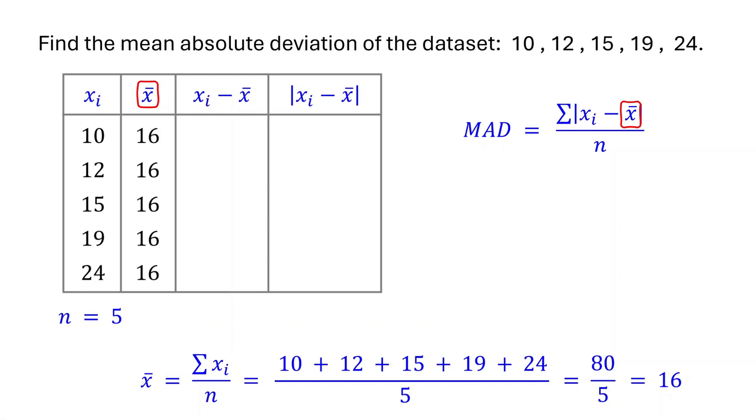Now, write down 16 in the second column of the table. Next, subtract the mean from each data point.